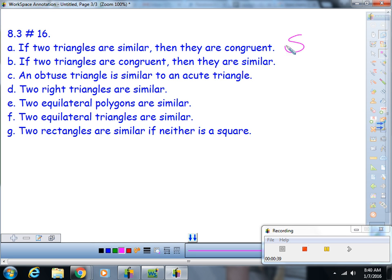Part B: If two triangles are congruent, then they are similar. Well, if two triangles are congruent, do they have at least two angles that we could prove to be congruent to each other? Yes. So that's always going to be true.